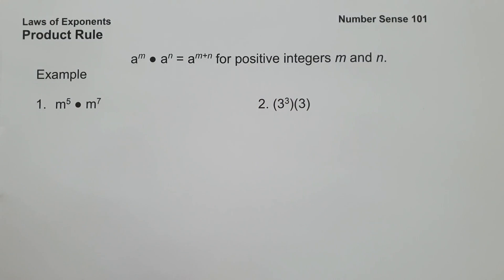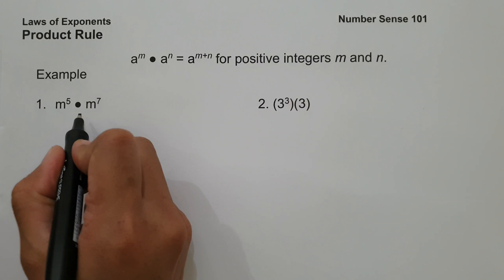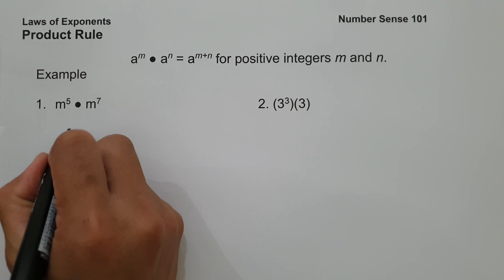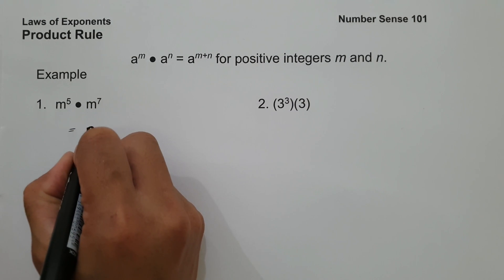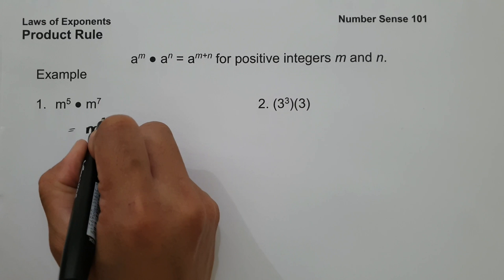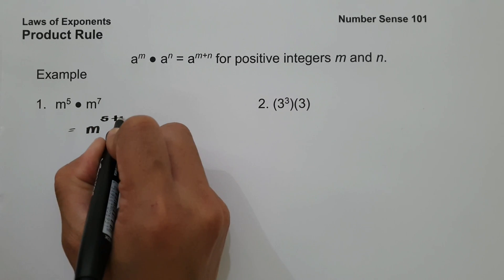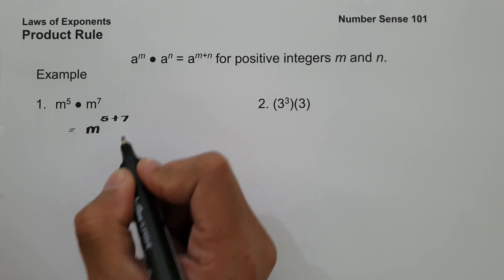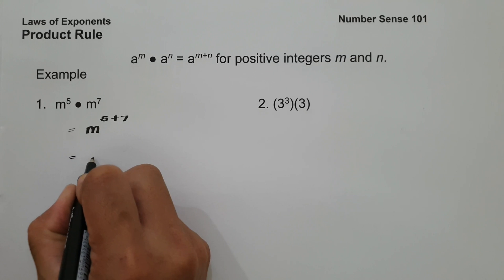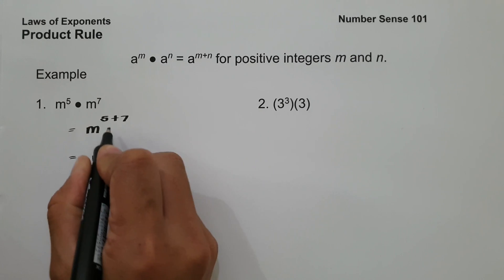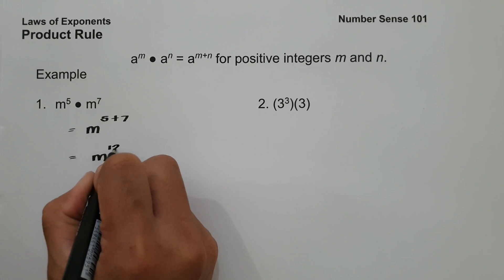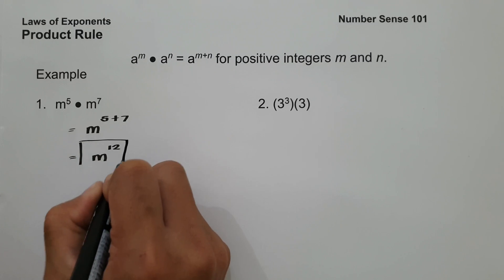Let's have an example. On number one, we have m raised to 5 multiplied by m raised to 7. As you can see, we have the same base. All you have to do is copy the base and add their exponents, that is 5 plus 7. To simplify, this will be m raised to 5 plus 7, that is 12. And this will be our answer.